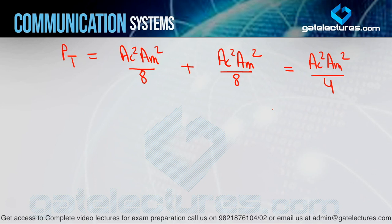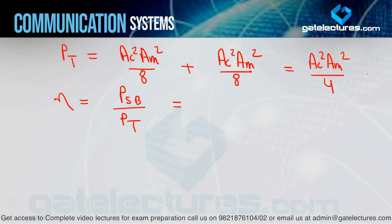Now for power saving when moving from DSB-FC to DSB-SC: the entire carrier power PC is saved. Power saving = PC / [PC × (1 + μa²/2)]. PC cancels, giving: power saving = 2 / (2 + μa²). For μa = 1, power saving = 2/3 = 0.66 = 66%. This confirms that 66.67% power was being wasted in DSB-FC as carrier power, and the same 66.67% is saved in DSB-SC.